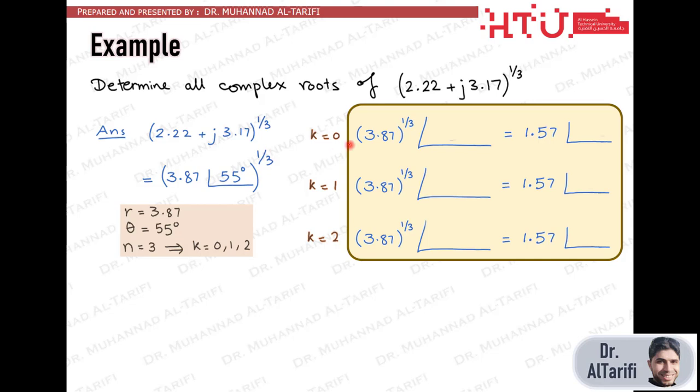For k equals 0, the phase is 55 divided by 3 or 18.3 degrees. And for k equals 1, the phase is 55 plus 360 degrees divided by 3 or 138.3 degrees. And for k equals 2, the phase will be 55 plus 2 times 360 degrees divided by 3 or 258.3 degrees. And these are all three roots in polar form.